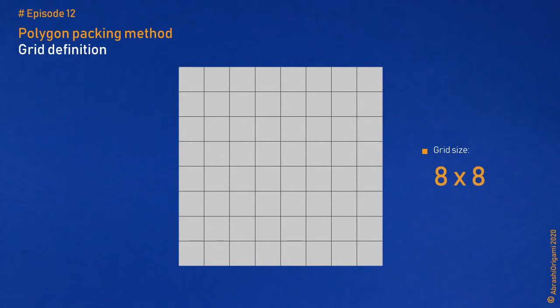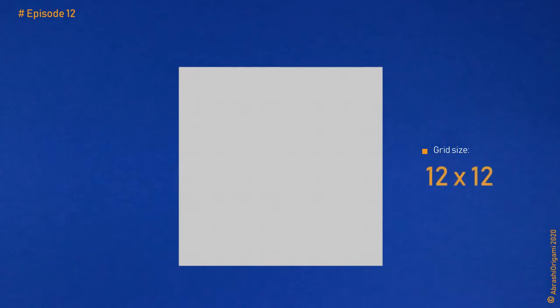But what if the number of squares is not a multiple of 2? How to divide a paper into a grid whose squares cannot be obtained by consecutive halving of a paper? What if we need, for example, a 12 by 12 grid? What in that case? Well, the procedure is, strangely enough, very simple and straightforward.